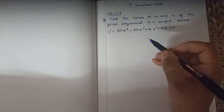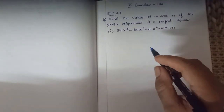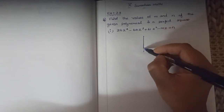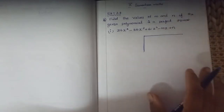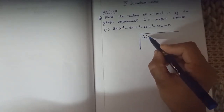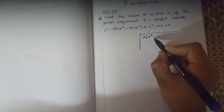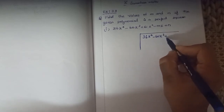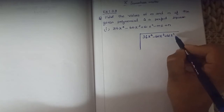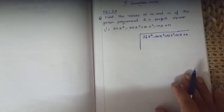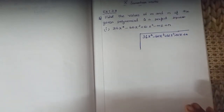First thing is you have to use the long division method. So checking is over. Next, I am going to put it in the long division to find the values of m and n. So 36x to the power 4 minus 60x cube plus 61x square minus mx plus n — this is the polynomial. For this we have to find the square root by long division method.